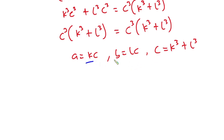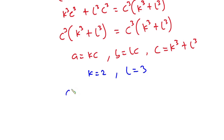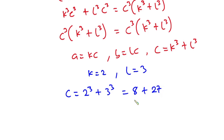We also have k and l which are integers where k is not equal to l. Now if we assume k is equal to 2 and l is equal to 3, then c is equal to 2 to the third power plus 3 to the third power, which is 8 plus 27, so c equals 35.